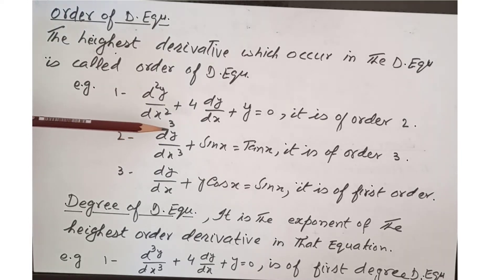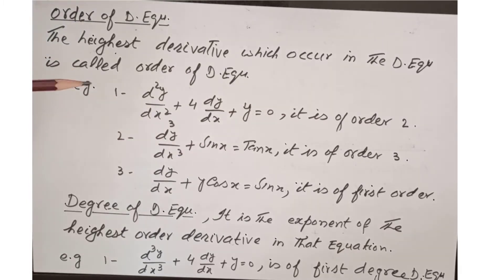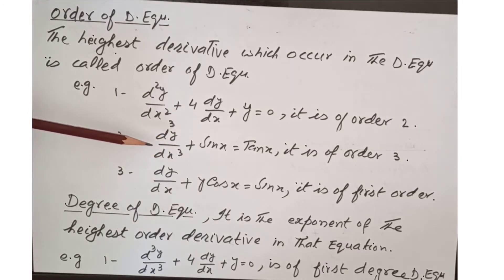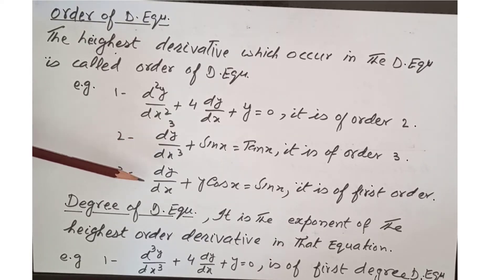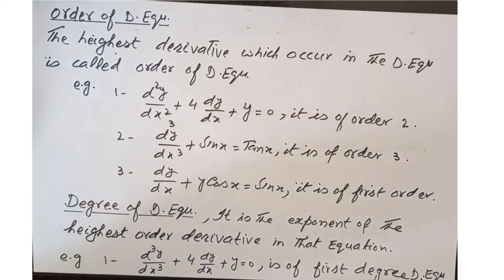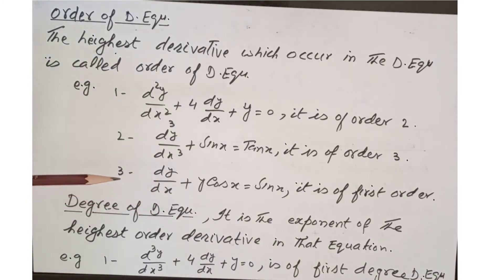In the second example, d³y over dx³ plus sin x equals 10x is of order 3, because the highest derivative is d³y over dx³, which is a third order derivative. In the third example, dy by dx plus y cos x equals sin x is a first order differential equation, because it contains only a first order derivative.